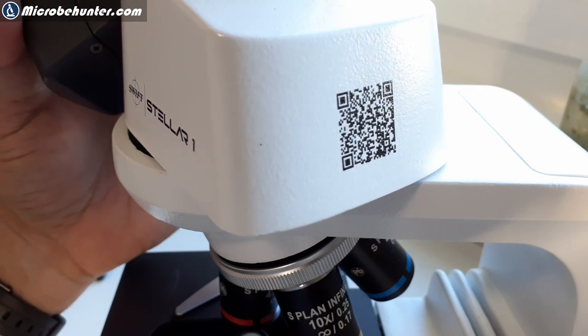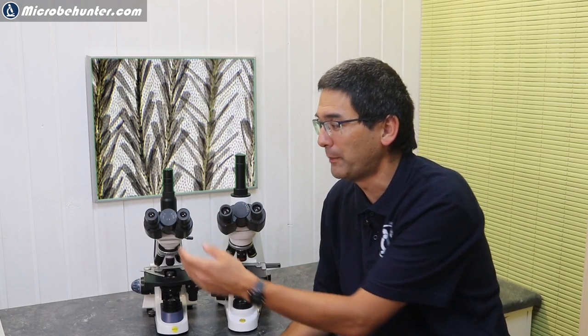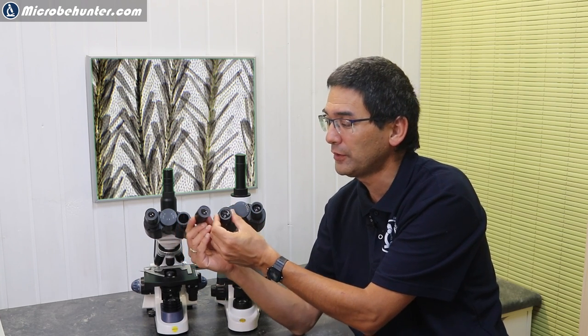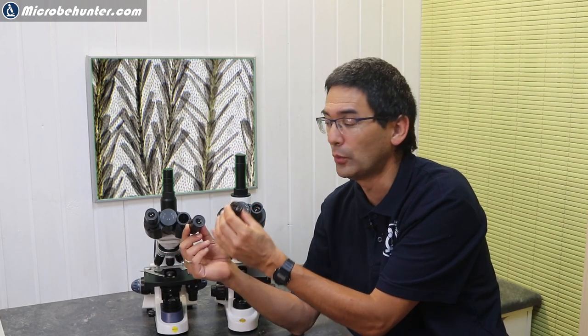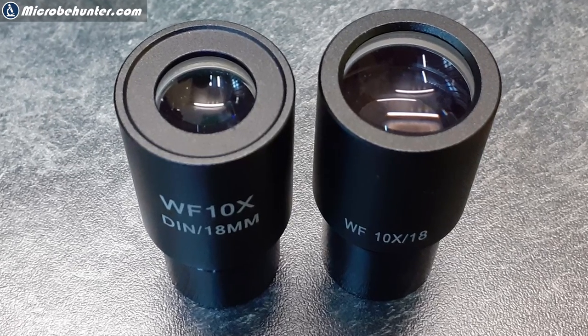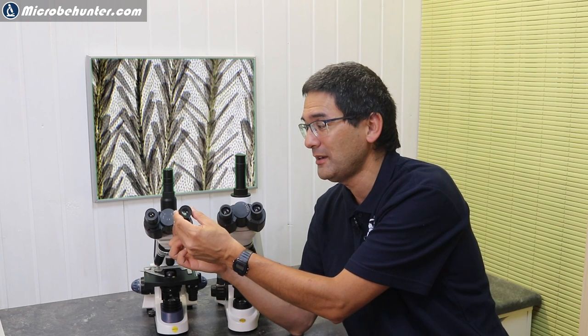So now let's have a look at the eyepieces of those two microscopes. Both of them have 10x eyepieces connected, but if you take them out and compare them, you're going to see that the Stellar One eyepiece front lens here is significantly larger than the one of the 380T. What is the difference? The difference is that the Stellar One actually has eyepieces with a larger eye relief, so-called eye relief.